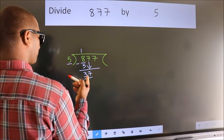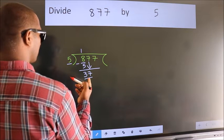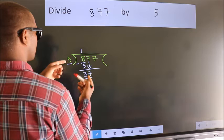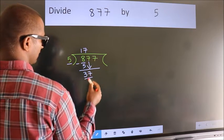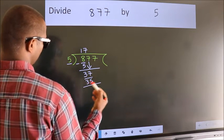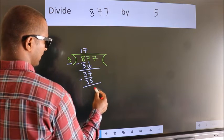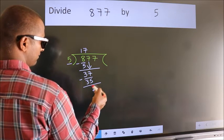So 37. A number close to 37 in the 5 table is 5 times 7 equals 35. Now we subtract and get 2. After this...